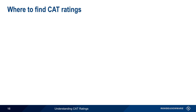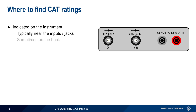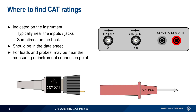How do we determine CAT ratings? These are normally indicated on the instrument itself, typically near the actual inputs or jacks, but sometimes found on the rear of the instrument. Naturally, this information should also be contained in the instrument's specifications or data sheet. For DMM leads or oscilloscope probes, the CAT rating is sometimes printed near either the measurement point or near the instrument connection point. The DMM probe caps mentioned earlier will sometimes also have CAT and rated voltage values printed directly on them.